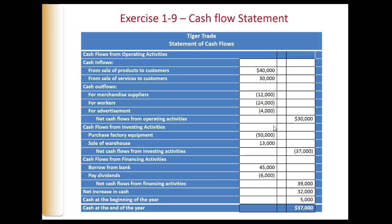For investing activities — remember, these have to do with long-term purposes for the company — purchasing factory equipment is an outflow, and receiving money from the sale of a warehouse is an inflow. Between those two items, we have a net cash flows from investing activities of negative $37,000. Our financing activities include borrowing money from the bank and paying dividends — that's all we have here.